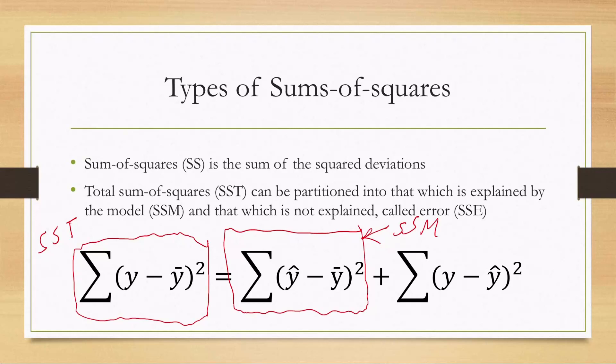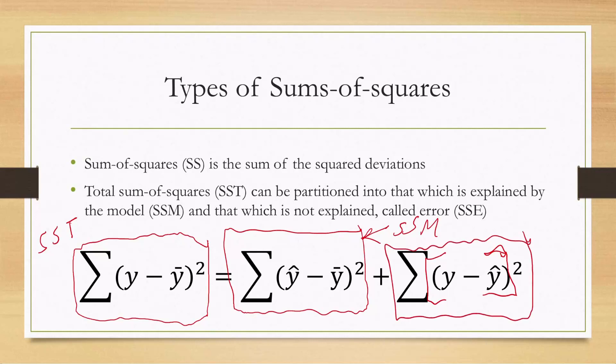The explained variation we call the sums of squares for the model — that is, what is explained by our model. In our example, we're modeling mortality rate from the latitude of the geographic center of each state. The portion of total variation accounted for by the model is SS_model. The remaining unexplained portion uses the residuals: we square all the residuals and add them up, giving us the sum of squares error, SS_error.